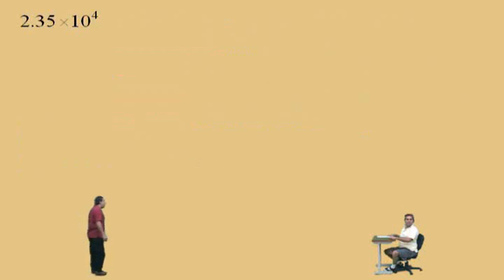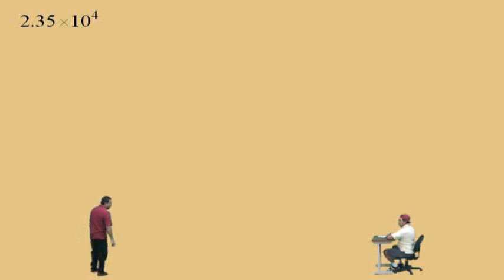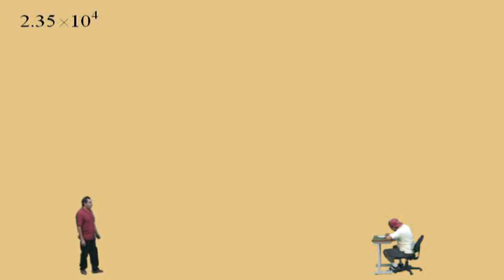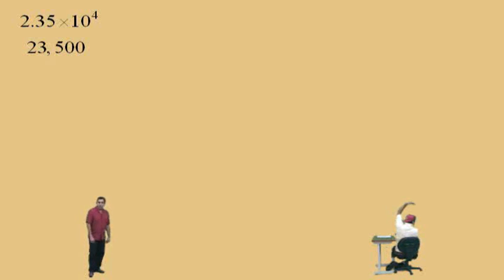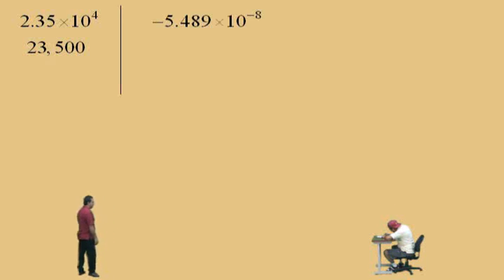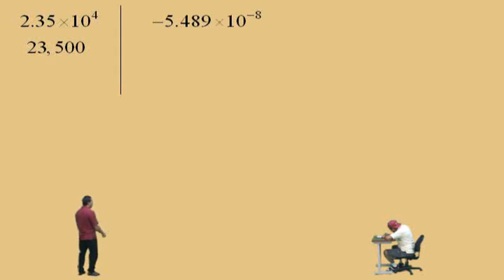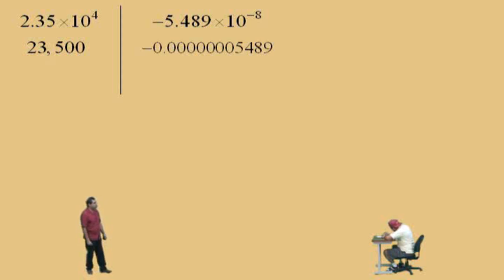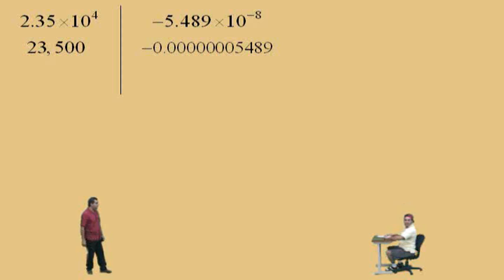So, 2.35 times 10 to the 4th — which way does the decimal move? To the right, 4 times. That's our review. Negative 5.489 times 10 to the negative 8 moves the decimal to the left 8 times, and there's your answer.